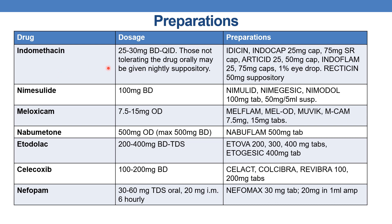The next drug is indomethacin. The dose is 25–50 mg two to four times a day. Those not tolerating the drug orally may be given it as a suppository nightly. Marketed preparations are Edicin and Indocap in 25 mg capsule and 75 mg sustained release capsule, Articid in 25–50 mg capsule, Indoflame in 25–75 mg capsule and also 1% eye drops, and Recticin as 50 mg suppository. The next drug is nimesulide. The dose is 100 mg twice a day. Marketed preparations are Nimesulide, Nimegesic, and Nimodol in 100 mg tablets and 50 mg per 5 ml suspension.